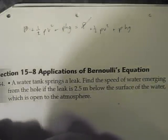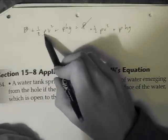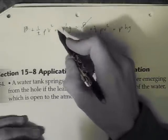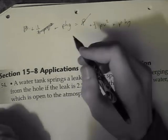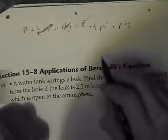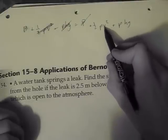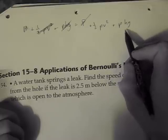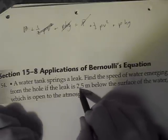For the first part, there's no velocity, it's just sitting still. So this whole part automatically cancels, and there's no height for the water in the first part, so that cancels. And for the second part, we do have a velocity, it's going to be moving, and we do have a height because we're given 2.5 meters.